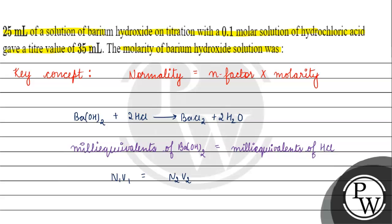For barium hydroxide, what will the n-factor be? The acidity is 2. So we have 2 times molarity M₁ times volume, which is 25 ml.